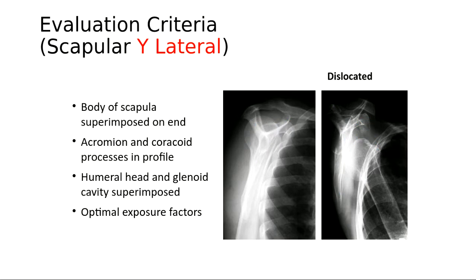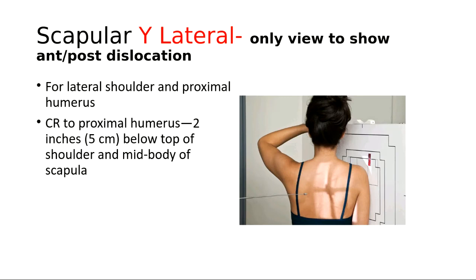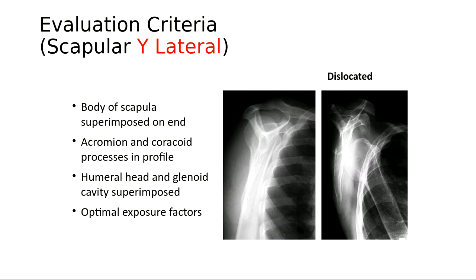On a properly positioned Y view, the body of the scapula should be superimposed on end, the acromion and coracoid are in profile, and the humeral head and glenoid cavity should be superimposed with good exposure factors. The technique is 80 kVp at 7.5 mAs for the Y view because you're going through more tissue with the patient obliqued. This is done for fractures or dislocations and is the only view to show the anterior-posterior aspect.